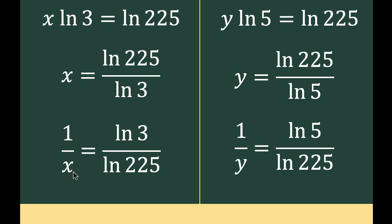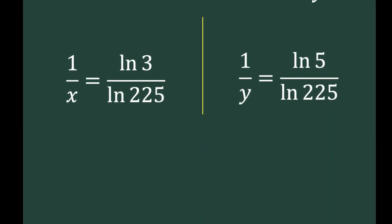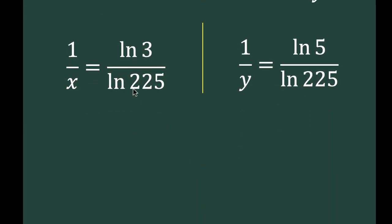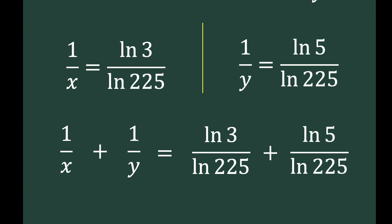Notice now that we have expressions for both 1 over x and 1 over y. We can add these two equations, since the denominators on the right sides are equal. Adding gives 1 over x plus 1 over y equals ln of 3 over ln of 225 plus ln of 5 over ln of 225.